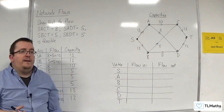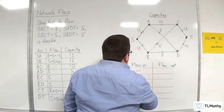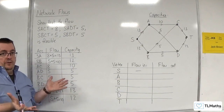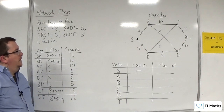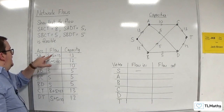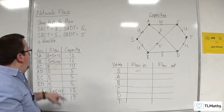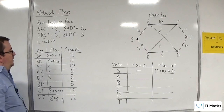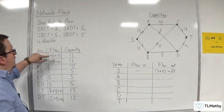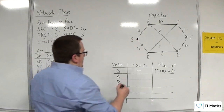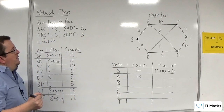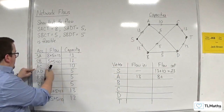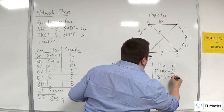We now need to check that the flow in is equal to the flow out. There's no flow going into S — the flow in and flow out have to be the same apart from the source and the sink. The flow out of S is SA and SB: 13 plus 10, so 23. The flow into A is just SA, which is 13. Coming out of A we've got AC and AD: AC is 8 and AD is 5, which makes 13 — so that's all good.